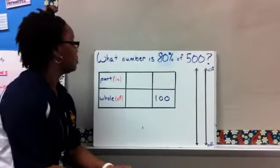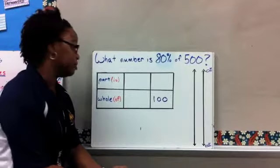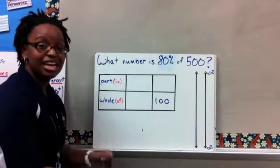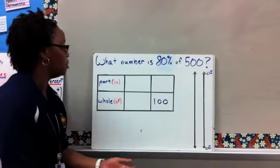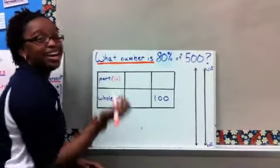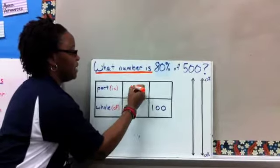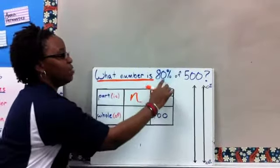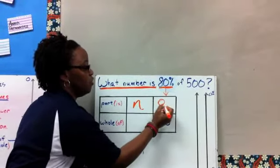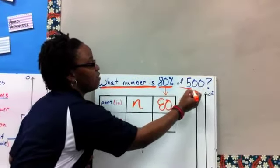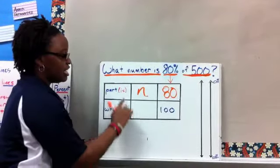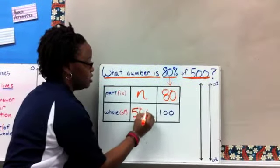So here's our first example. What number is 80% of 500? Our part and whole are already set up and we can use some simple words, is and of, to help us figure out where these numbers go in our percent proportion. So first I notice what number is. What number means I don't know what number is and I'm going to put my variable there. 80%, we know percent is always out of 100 and so my 80 is going to be placed over 100. Lastly, of 500, so that has to be my whole number is over of and so my 500 is going in the hole.